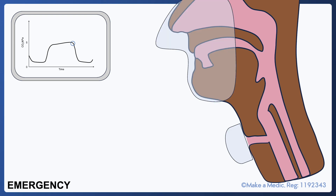If the patient is not improving or remains unstable, the tracheostomy tube should be removed. You should then look, listen, and feel at the mouth and tracheostomy for expired air. Oxygen should be applied to the face and stoma, and waveform capnography should be used.